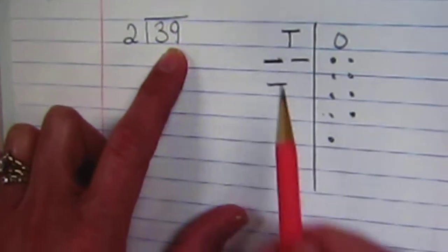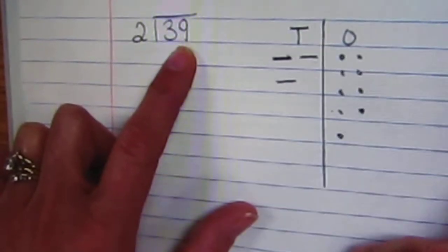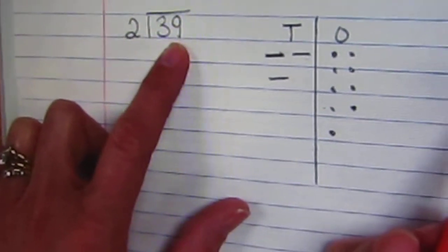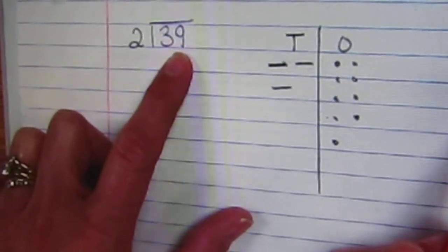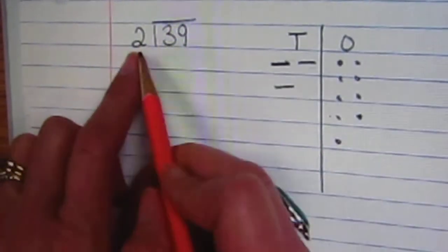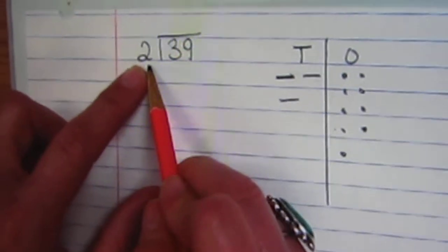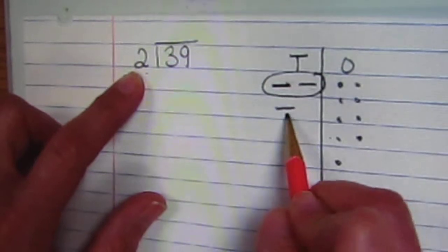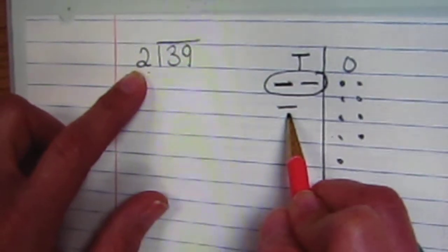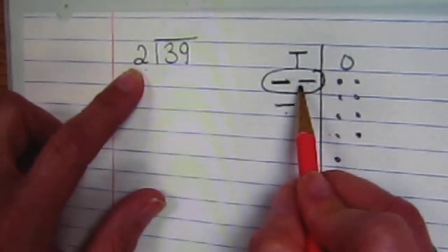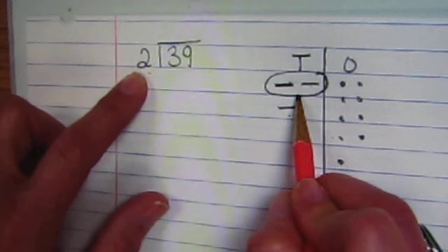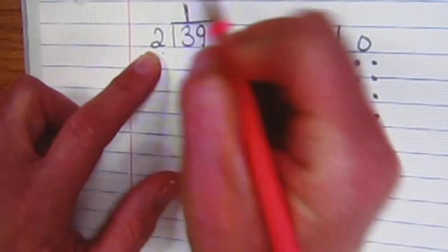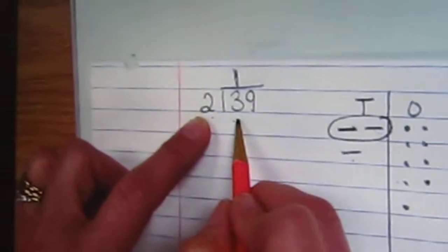We tell the kids to group these in twos so it's easier — they're not all over the place so you can easily count them. So we have two groups and we're going to circle each two. We'll circle two tens, and I have one left over that we'll need to regroup. But right now we have one group of two tens, so our one will go right above our tens place.